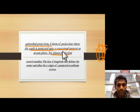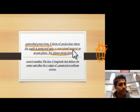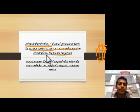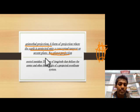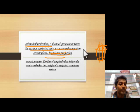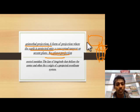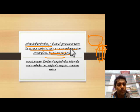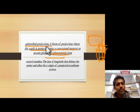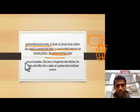The Earth is projected onto the conceptual tangent or secant plane. See also planar projection. It is a form of projection where the Earth is projected onto the conceptual tangent plane.